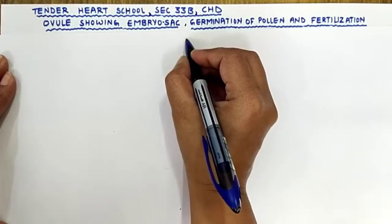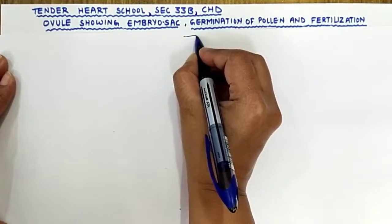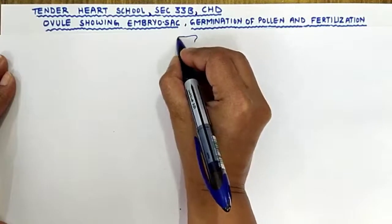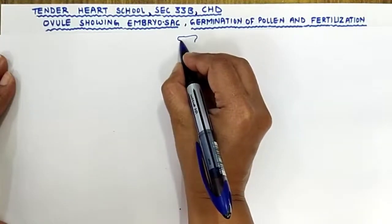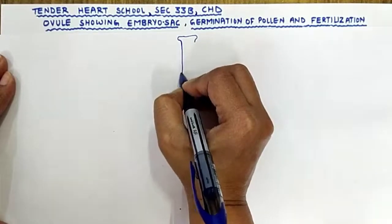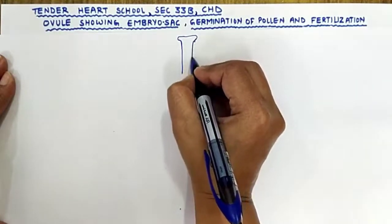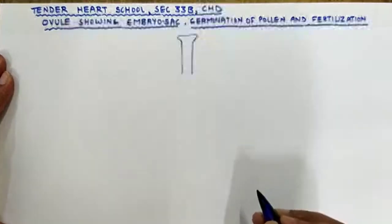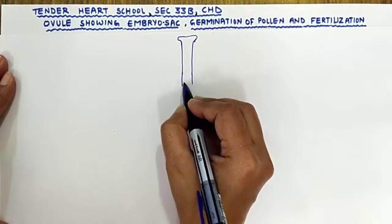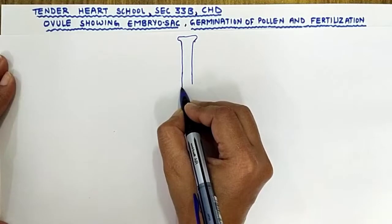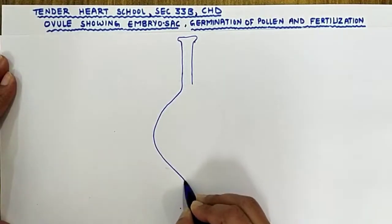Let us first draw the carpel. The upper expanded portion of the carpel is the stigma. Then we have the style. Then we have the ovary.